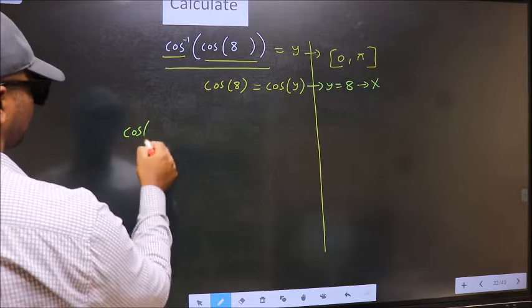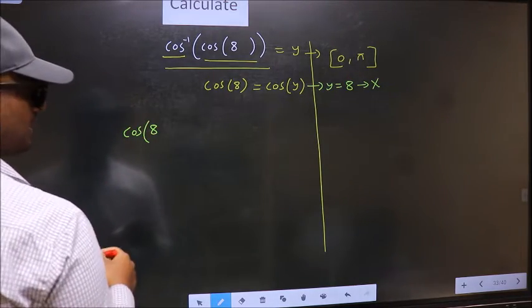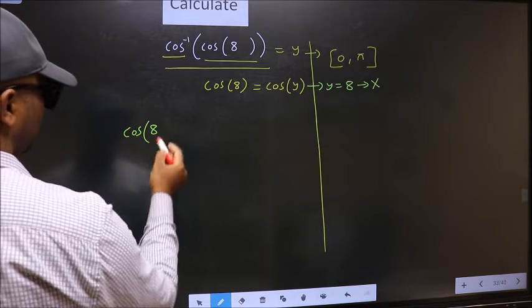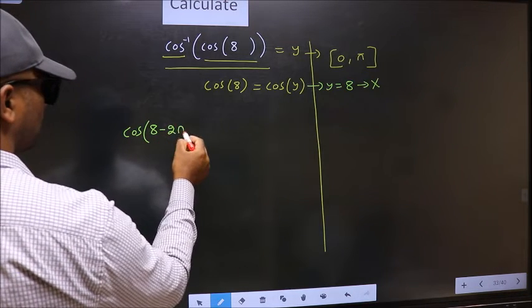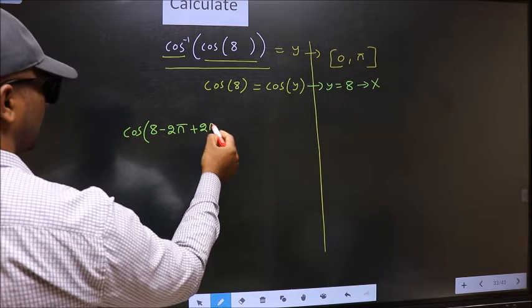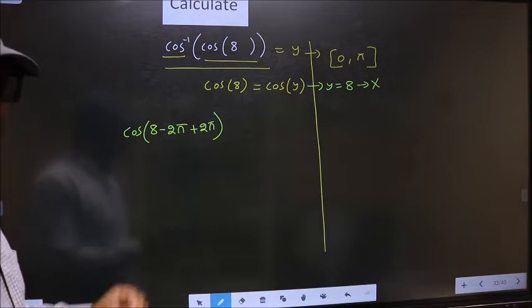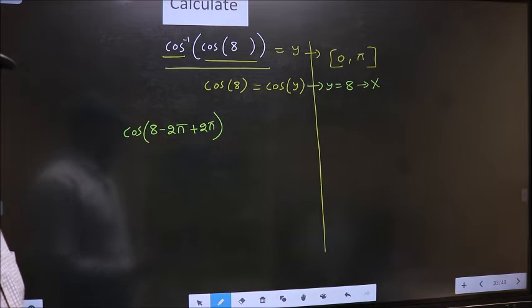Cos 8 exceeds that interval. So we should decrease it. To decrease, I subtract 2π. Now whatever we are subtracting, we should also add the same thing. Important point. Remember here. In cos inverse sums, we should always subtract only even multiples of π.